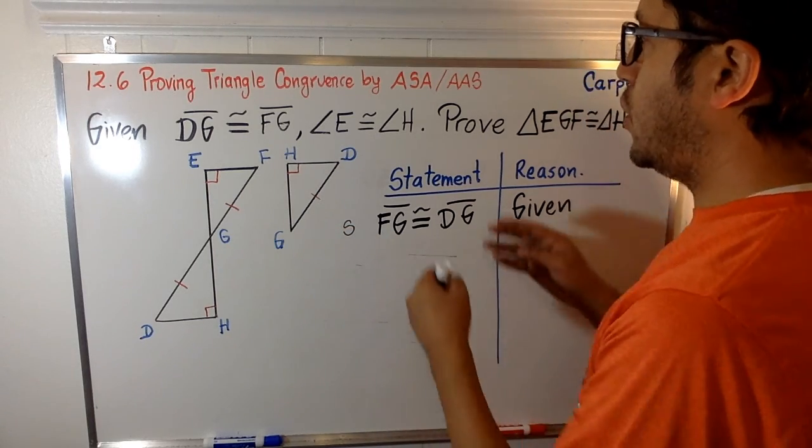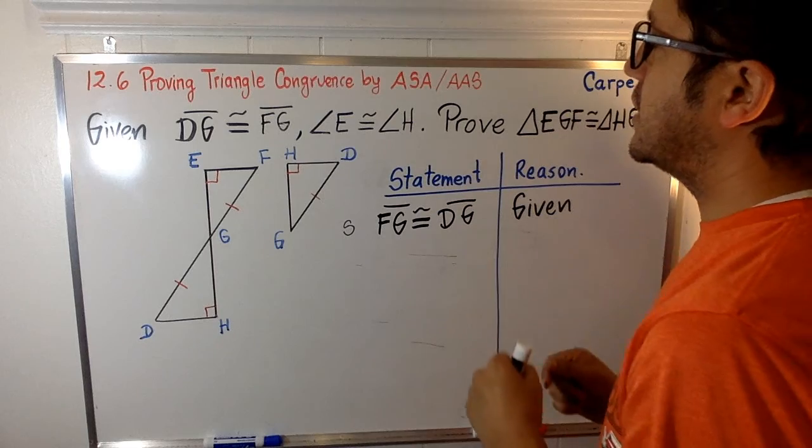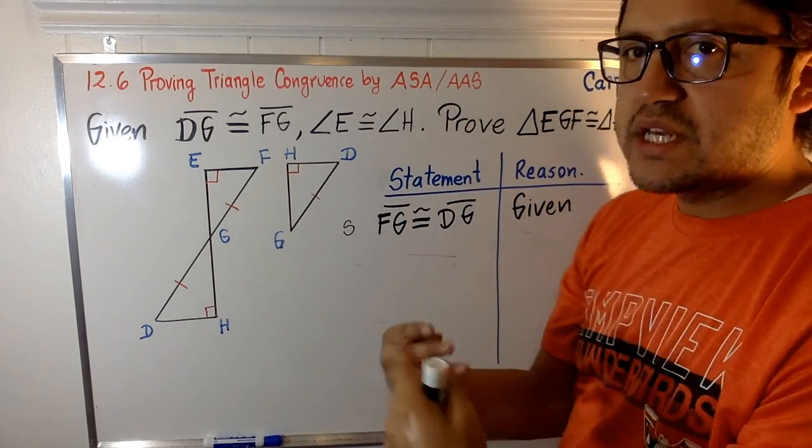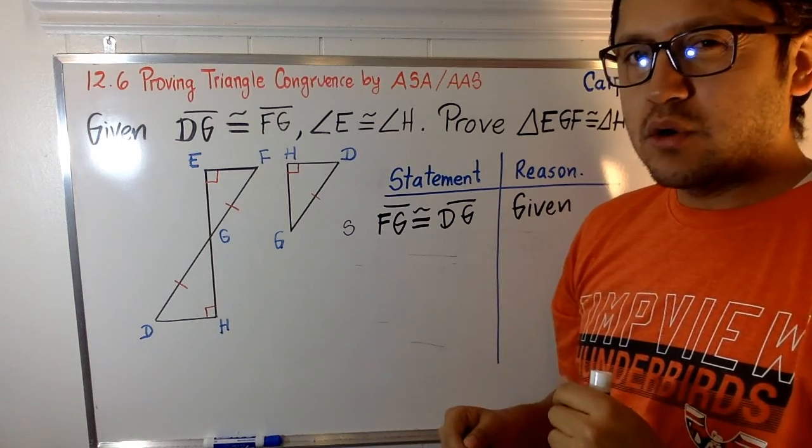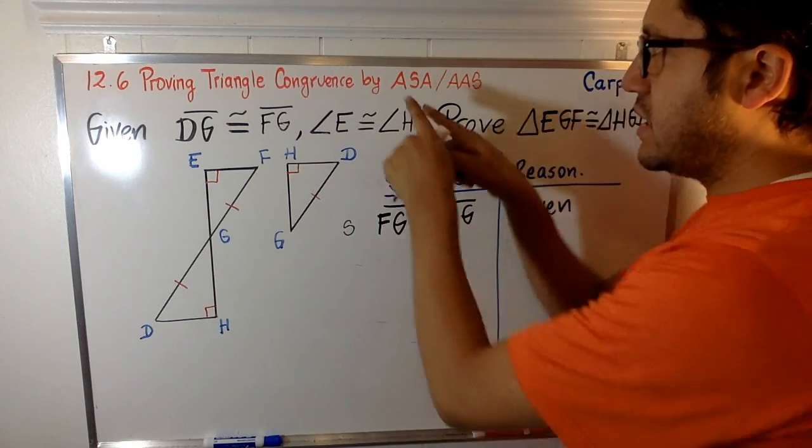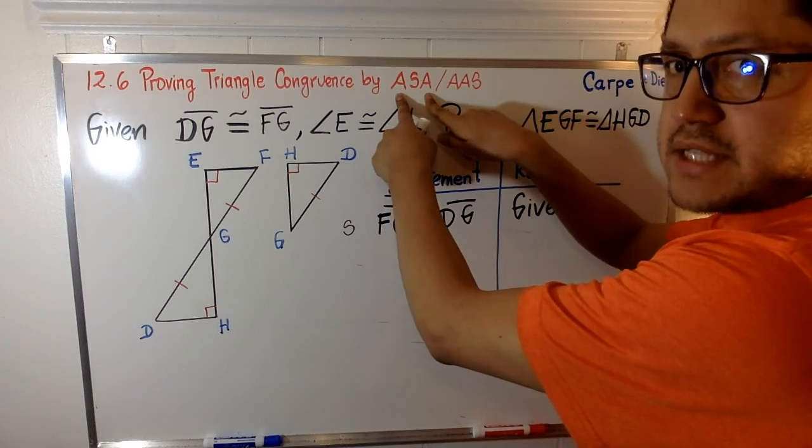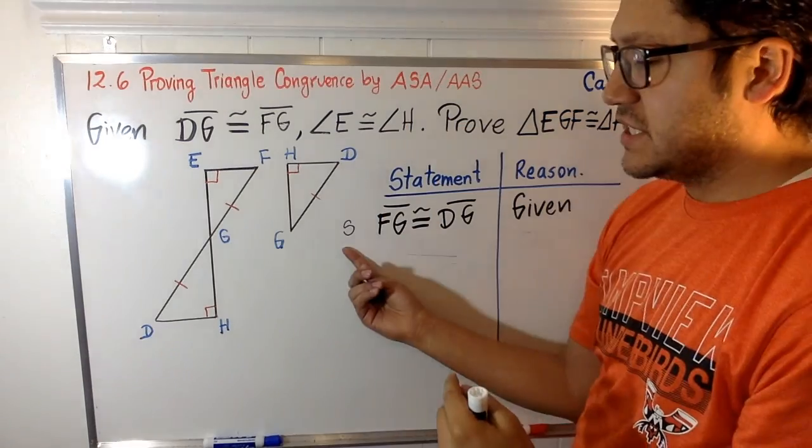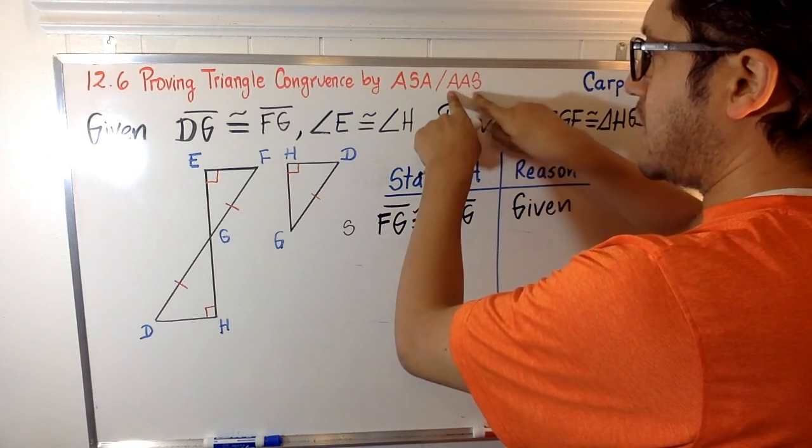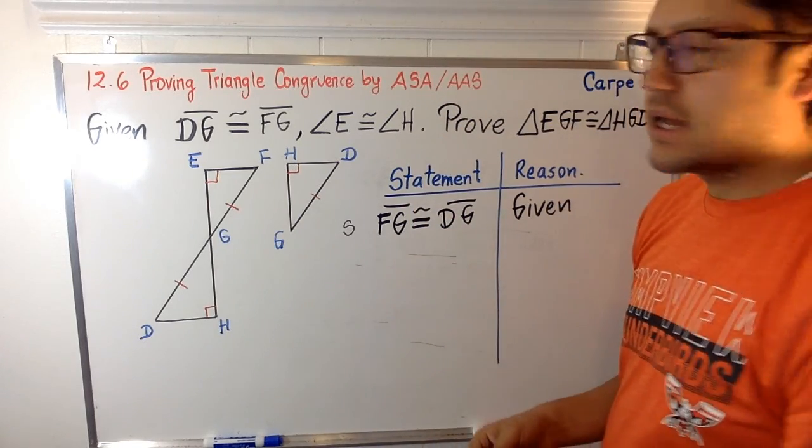Well, so we are in this situation now. We have one segment, okay? Now it seems like we need to go for two angles. Is it possible that this segment is in between the angles? Then it might be ASA. Okay. But if this segment is after the two corresponding congruent angles, then we're talking about AAS. So let's take a look at that.